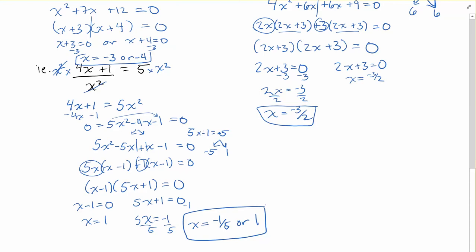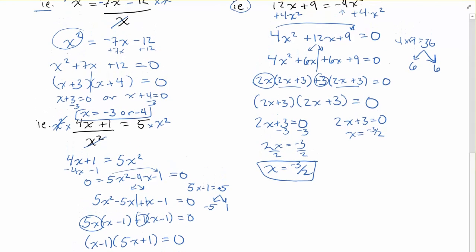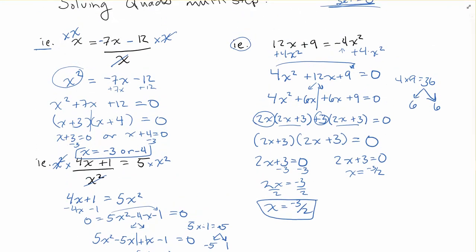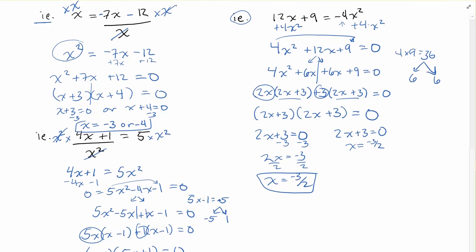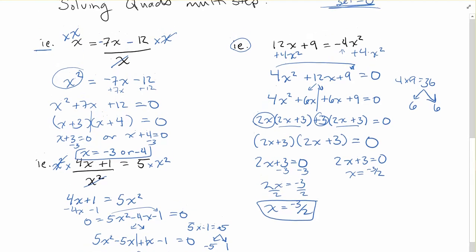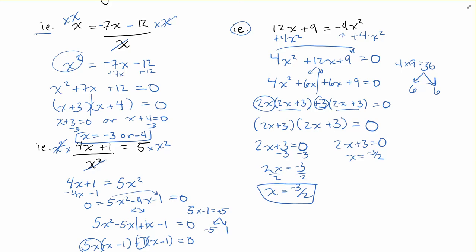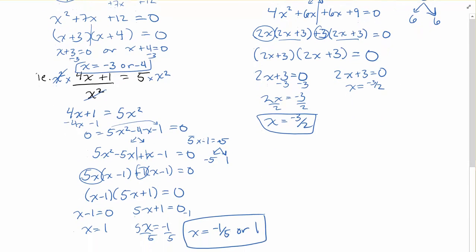So again, if you've got something as a fraction, don't be afraid to times it to get rid of it. And make sure that you watch your signs as you're rearranging, that you've got to get it set equal to 0. And as a bit of a trick, try and keep the squared term positive. It makes things a little bit easier. So rearrange yourself so that you end up with a positive squared term.